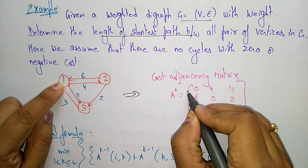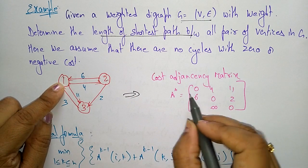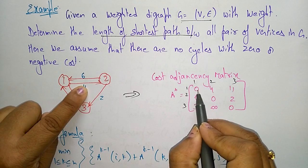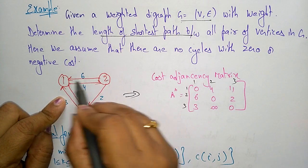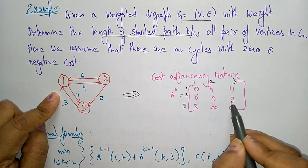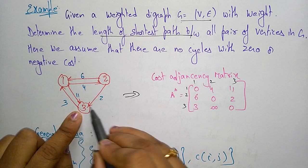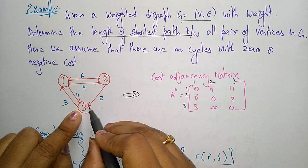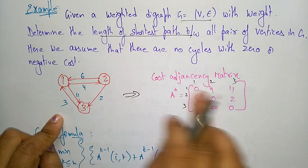The graph is expressed in the form of a matrix. A[1,1] is always 0 — the cost of visiting the same vertex is 0. A[1,2] = 4, A[1,3] = 11. A[2,1] = 6, A[2,2] = 0, A[2,3] = 2. A[3,1] = 3, and A[3,2] has no direct edge from 3 to 2, so we write infinity. A[3,3] = 0. This is the cost adjacency matrix.